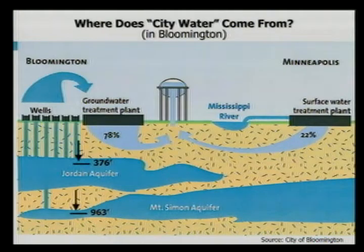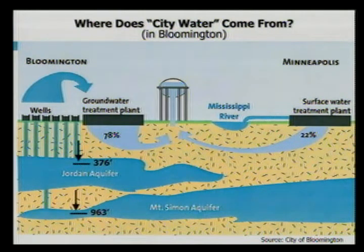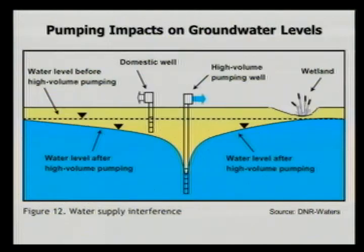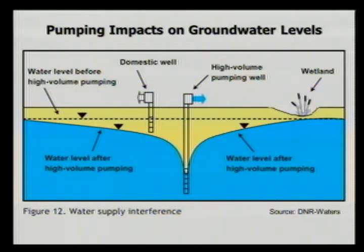Most of our water comes from deep aquifers about 400 to 1,000 feet below the surface — water that takes a long time to get there. In the case of Bloomington, Minneapolis, St. Paul, and some cities St. Paul supplies water to, they pull water from the Mississippi River, which then goes through a significant treatment process. There are impacts from pumping large amounts of water out of deep aquifer areas — in some cases it can bring down the shallow groundwater layer, lowering water levels in lakes and wetlands.